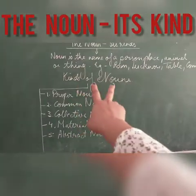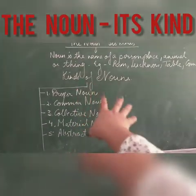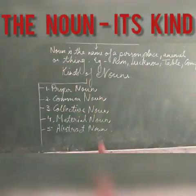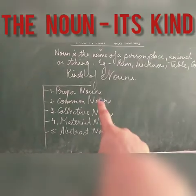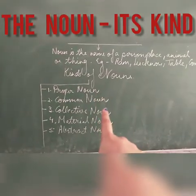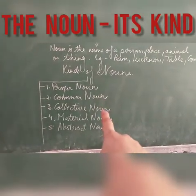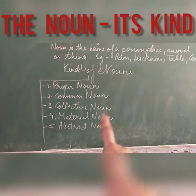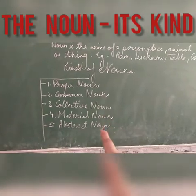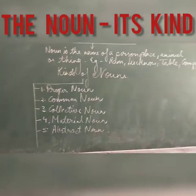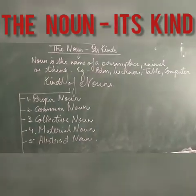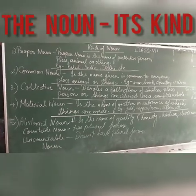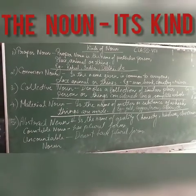Now come to the kinds of noun. What are the kinds of noun? These are the kinds of noun: number 1st, proper noun; 2nd, common noun; 3rd, collective noun; 4th, material noun; and 5th is abstract noun. So these are the kinds of noun.